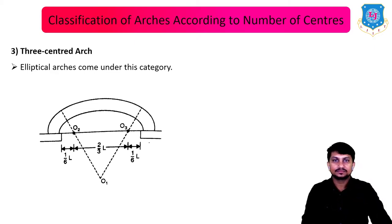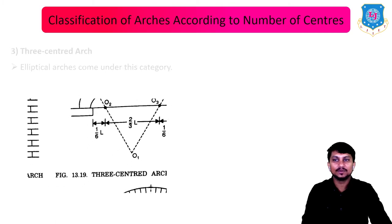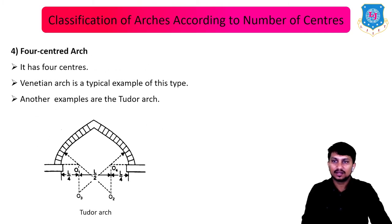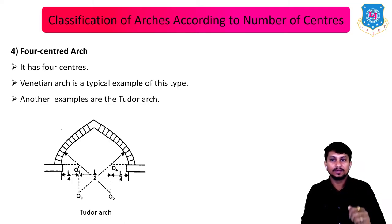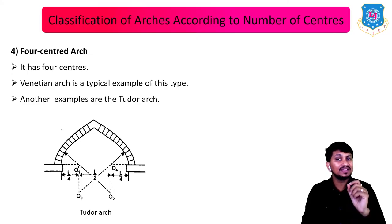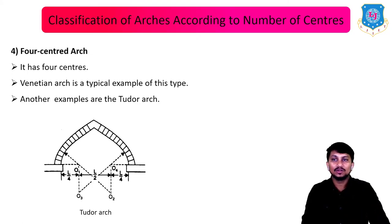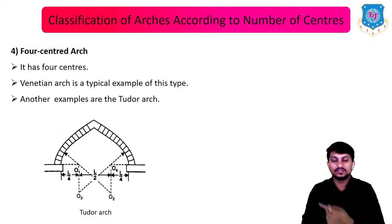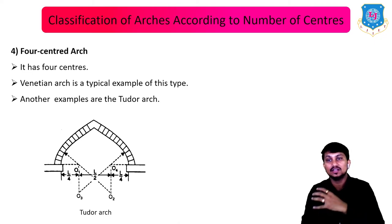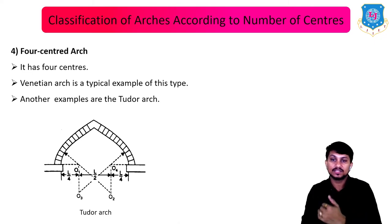Next is the four-centered arch, which has four centers in construction: O1, O2, O3, and O4. The Venetian arch is a typical example. Another example is the Tudor arch, which is drawn with the help of four centers placed at L/4, L/2, and L/4.